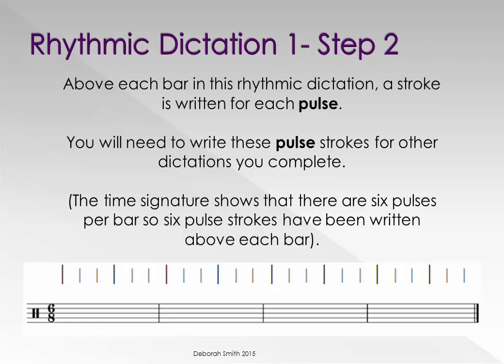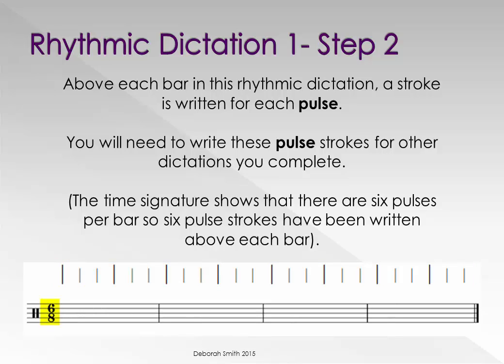Above each bar in this rhythmic dictation, a stroke is written for each pulse. You will need to write these pulse strokes for other dictations you complete. The time signature shows that there are six pulses per bar, so six pulse strokes have been written above each bar.